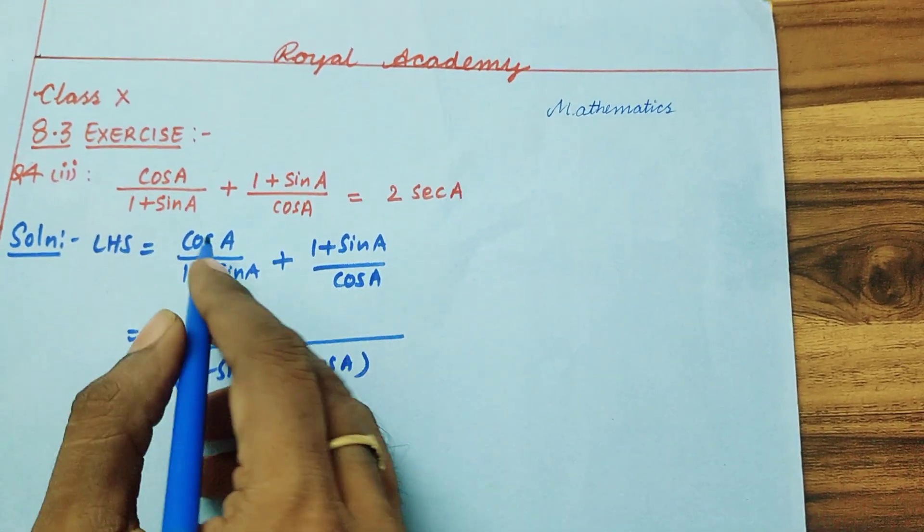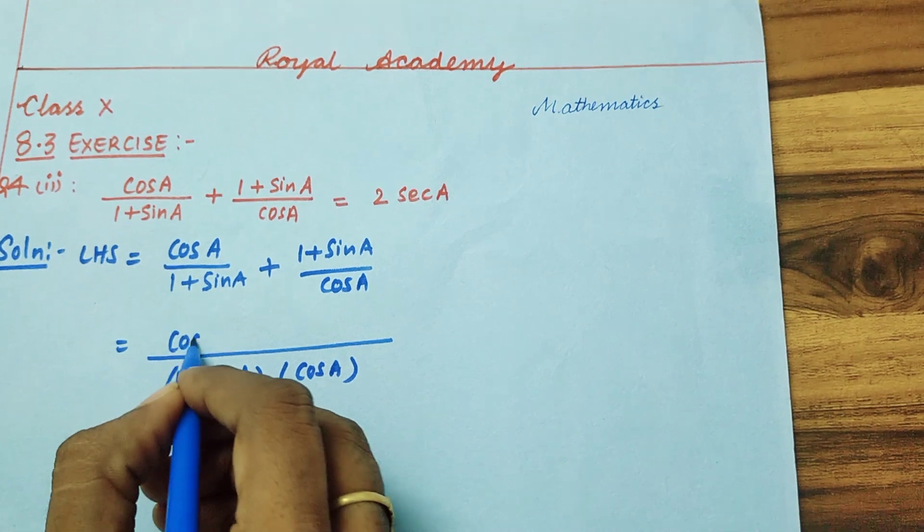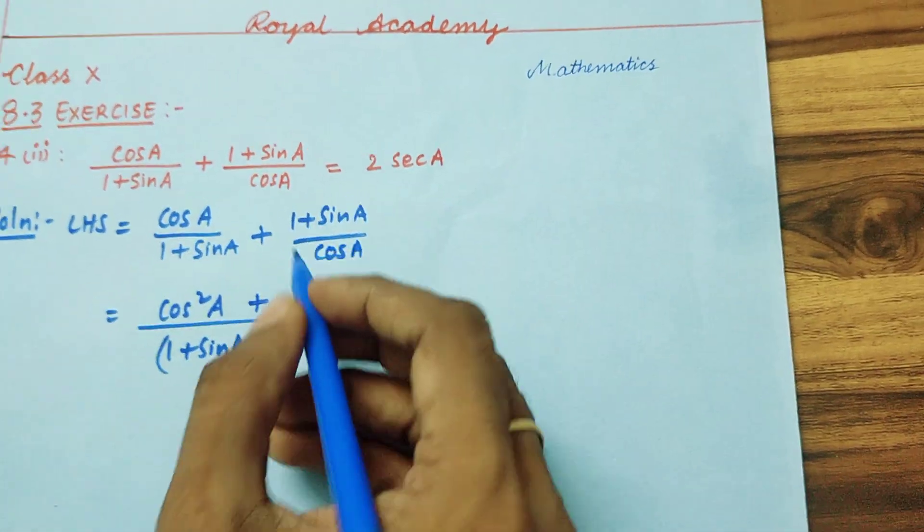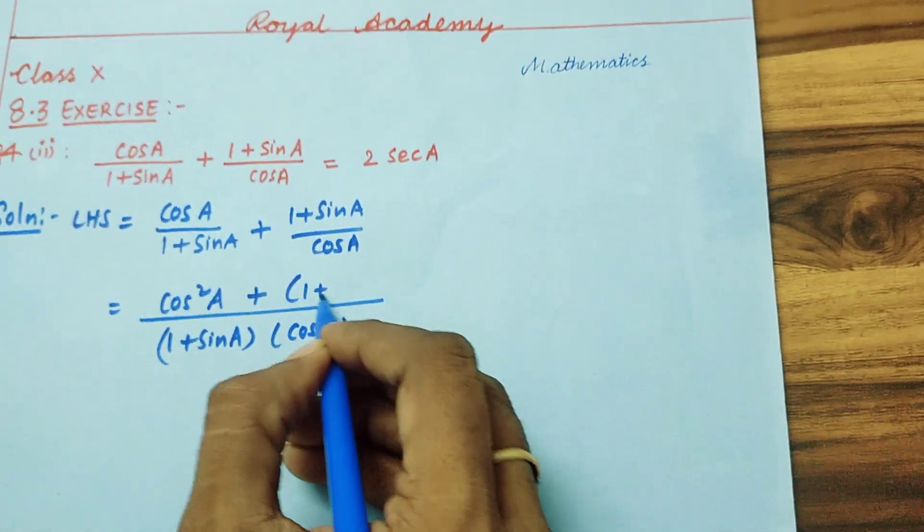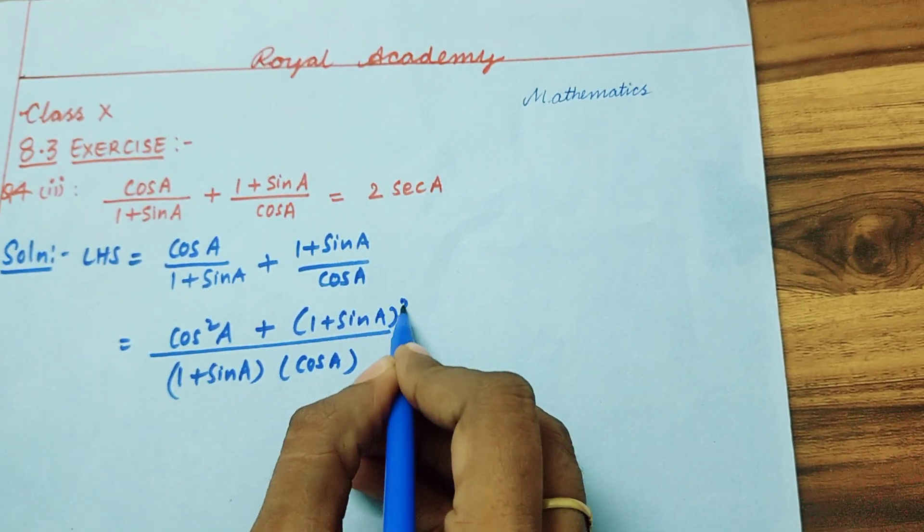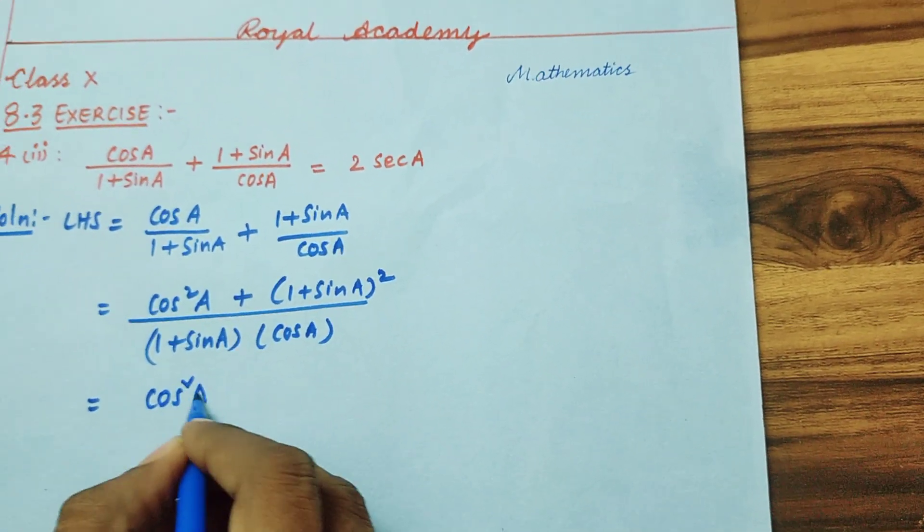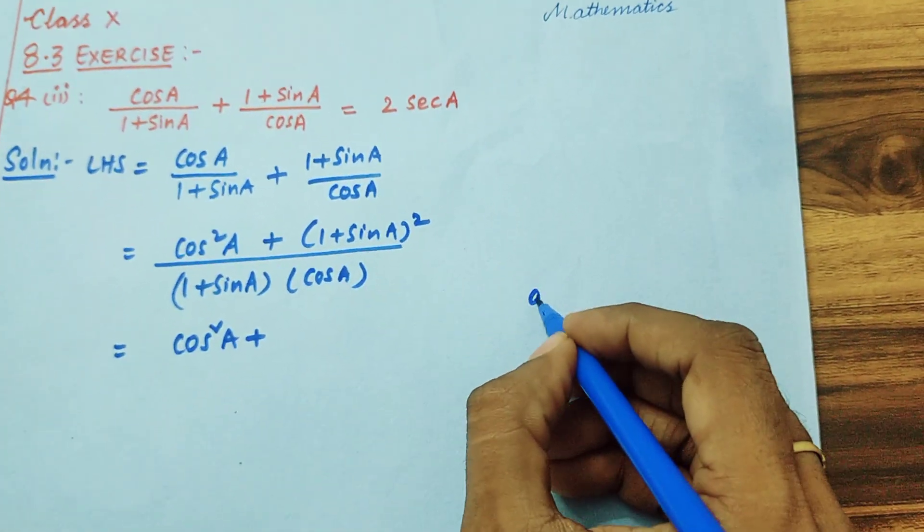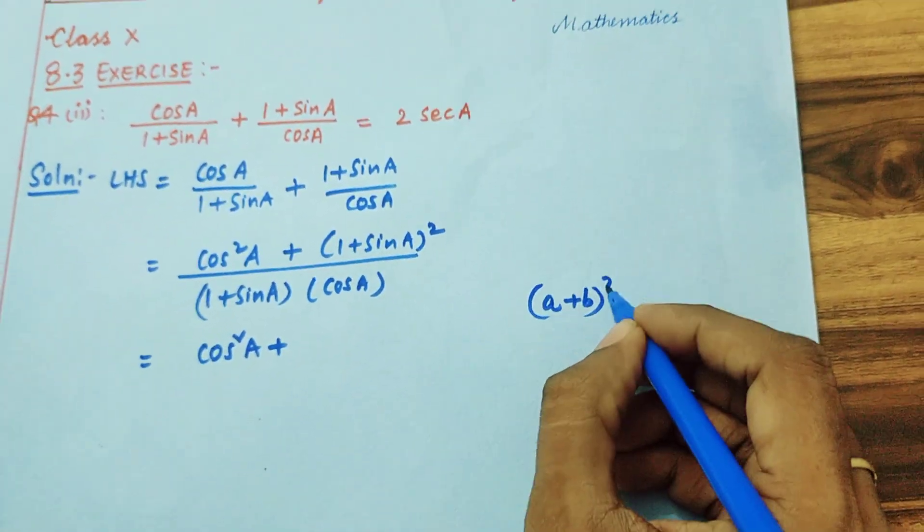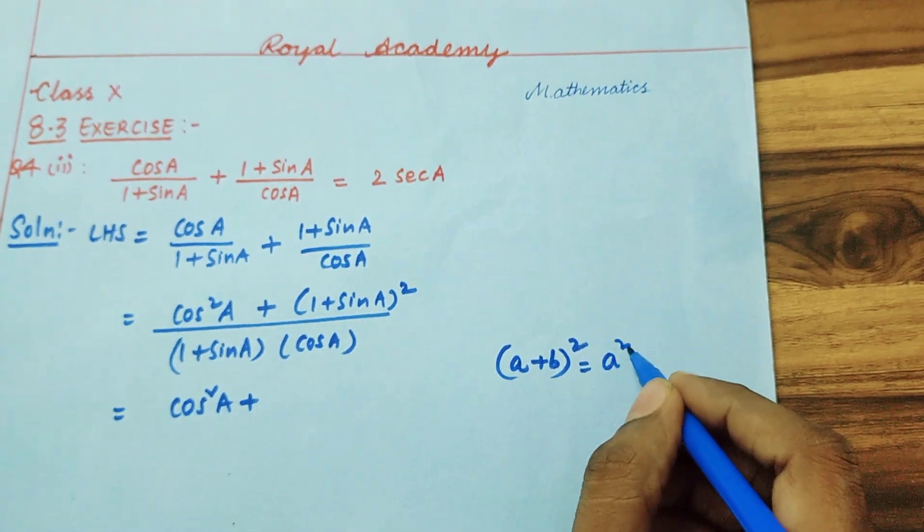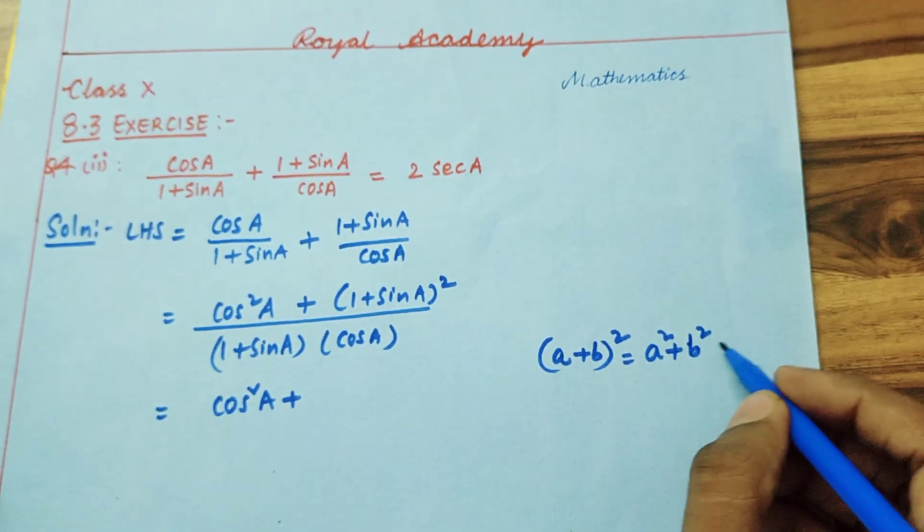Now you are going to get cos A into cos A, that is cos square A, plus 1 plus sin A into 1 plus sin A, that is 1 plus sin A whole square. cos square A plus here I am using A plus B whole square formula. A plus B whole square is equal to A square plus B square plus 2AB.